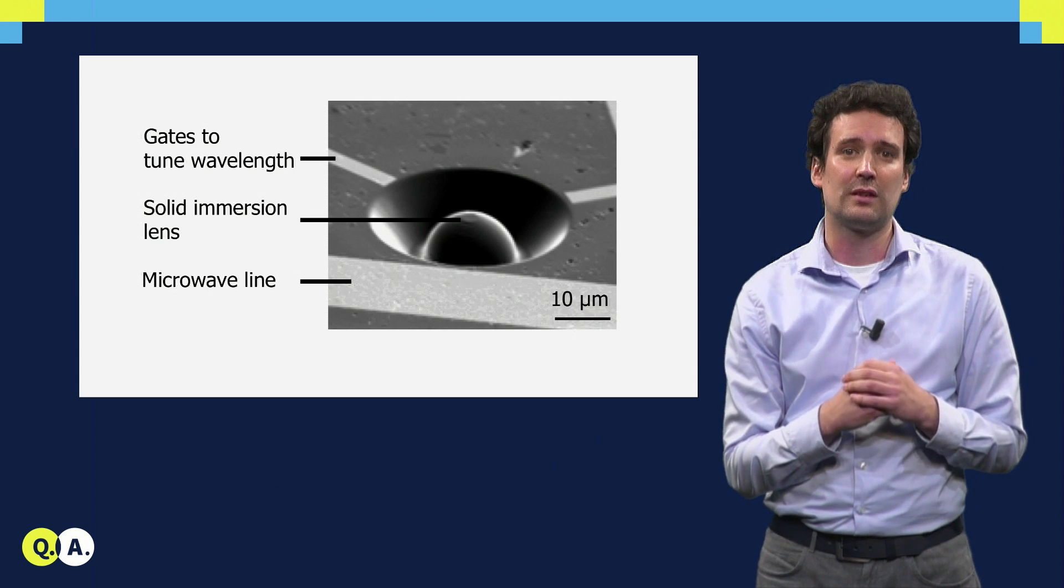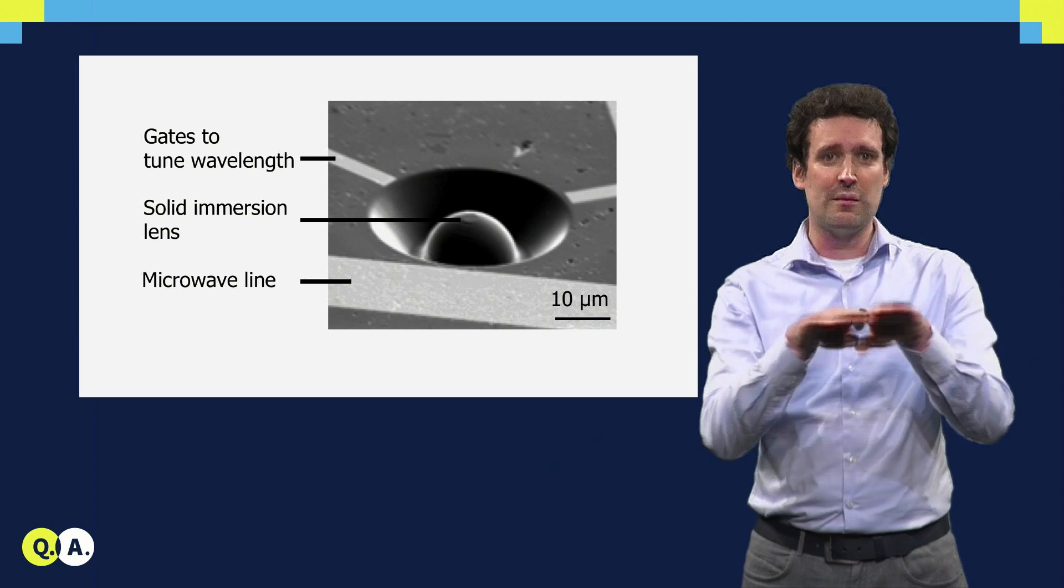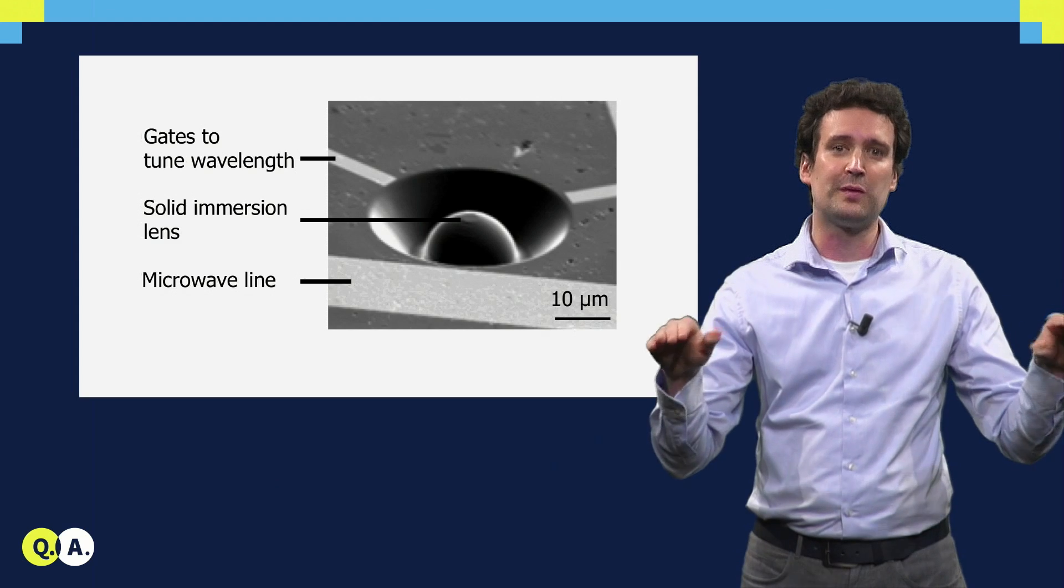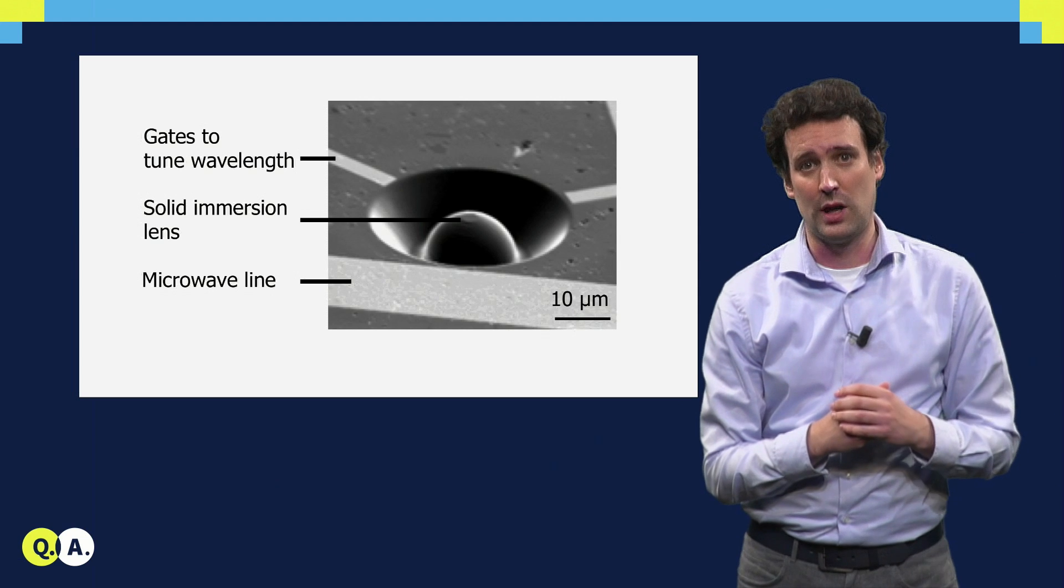Diamond has a very high refractive index, and that is one of the reasons that they are so shiny, but it also means that if we have a flat surface, we get a lot of total internal reflection, and by curving the surface, we can get about 10 to 20 times more light out.